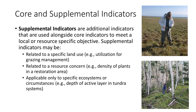Core indicators, however, are not sufficient to answer every management question. In this case, we can add supplemental indicators to help meet a local or resource-specific objective. Supplemental indicators may be related to a specific land use, like utilization measures for grazing management, or to a resource concern like measuring plant density in a restoration area, or applicable to only specific ecosystems—for example, measuring the depth of the active layer or depth to permafrost in tundra systems. Supplemental indicators are used in conjunction with core indicators.